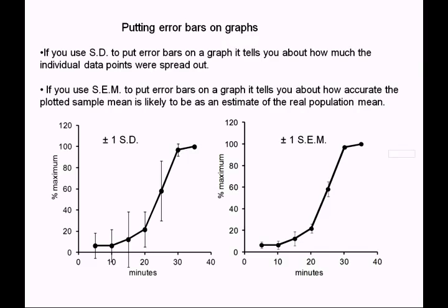For instance, at 25 minutes our mean is 60%, and the standard error bars indicate the true mean is probably somewhere between 45 and 75%. When describing a sample you believe is normally distributed, you have two error measures available, and you need to make an intelligent decision about which one to use — and explain your choice clearly in the accompanying text.